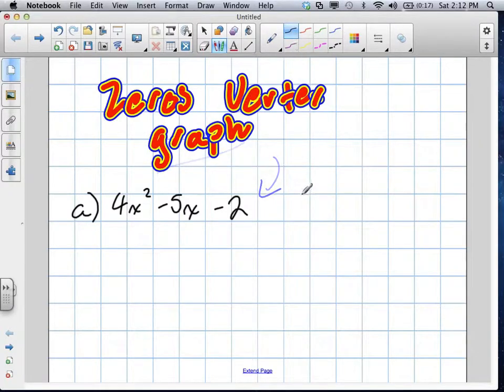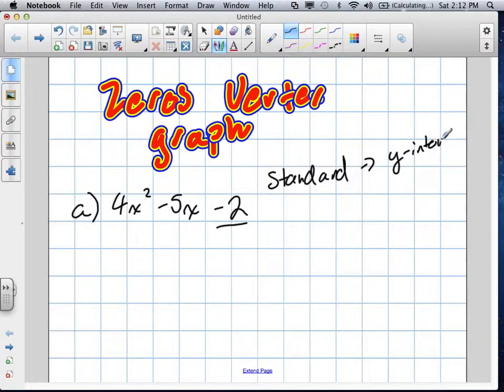Let's start with an S. Standard. Yeah, good. So this is in standard form. Standard form helps us find the y-intercept quickly. The y-intercept is essentially the last term. But not what they're asking us right now, so not the greatest form to be in.